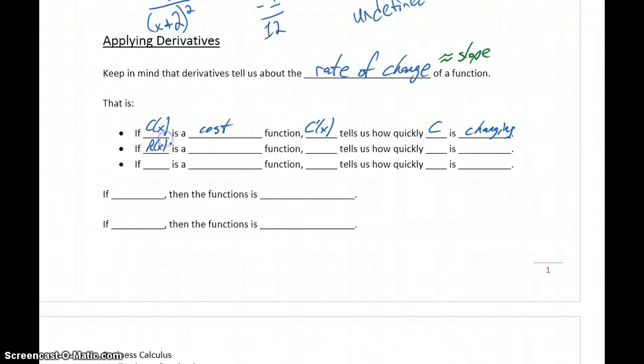If we're dealing with a function r of x, which is a revenue function, then r prime of x tells us about how quickly our revenue is changing. And if we're dealing with some function capital S of x, say that's a sales function, then s prime of x tells us how quickly our sales are changing.